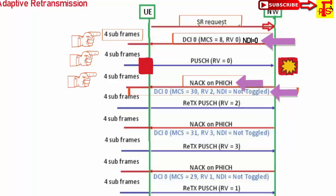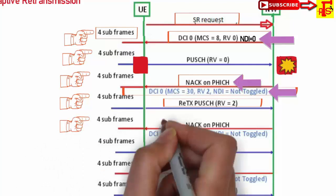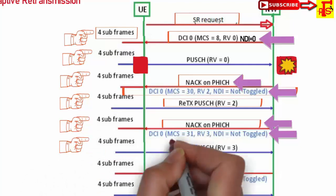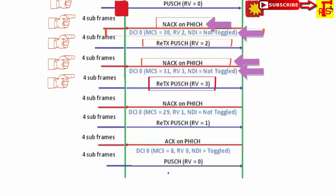When NDI bit is not toggled and RV changes from 0 to 2, the next packet is a retransmitted packet — the same packet sent again plus 4 subframes later with RV 2. After network feedback, NDI is still not toggled and RV changes from 2 to 3 — again the same packet is retransmitted with RV 3. Then RV changes from 3 to 1 and the packet is retransmitted with RV 1.